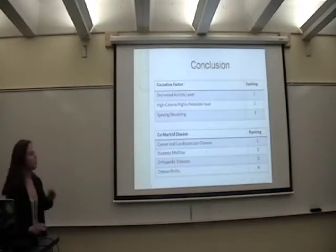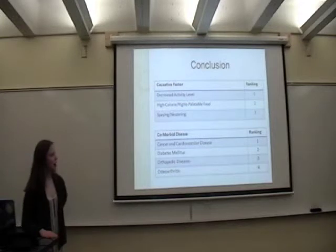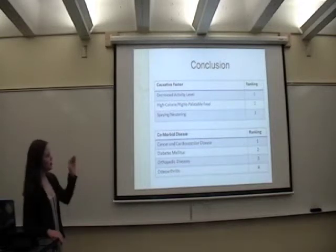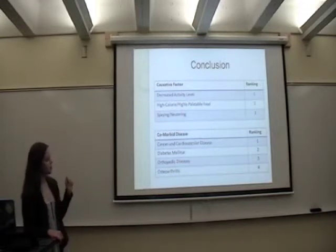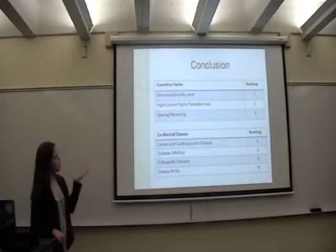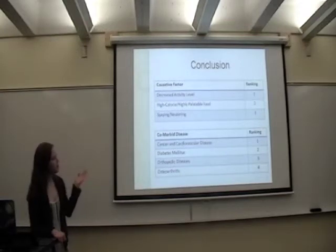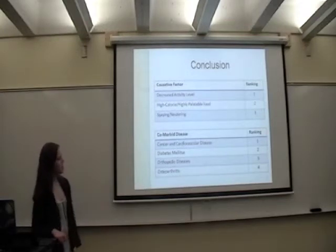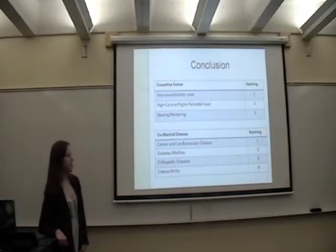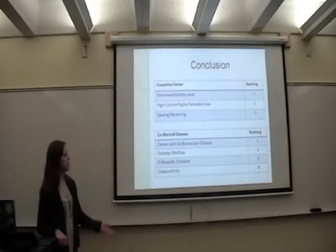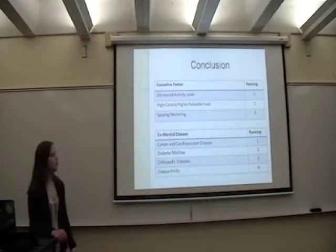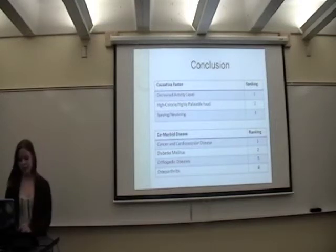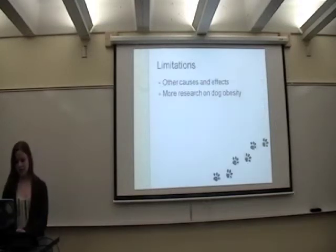In my conclusion, I rated all the factors and all the comorbid diseases. As you can see, decreased activity level was ranked number one among causes, and cancer and cardiovascular disease were ranked number one among the comorbid diseases.